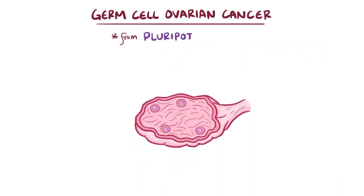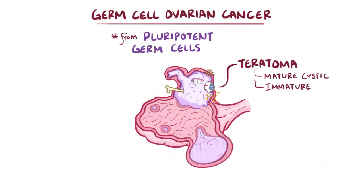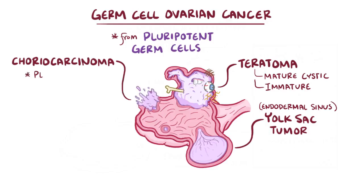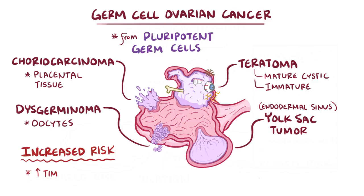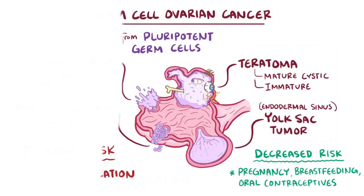As a quick recap, germ cell ovarian cancers come from pluripotent germ cells that normally develop into sperm or egg. The four major types of germ cell tumors are teratomas — both mature cystic and immature — yolk sac tumors or endodermal sinus tumors, choriocarcinoma or placental tissue tumors, and finally dysgerminomas or oocyte tumors. A well-known risk factor for ovarian cancers is the cumulative amount of time a woman spends in ovulation, with protective factors being pregnancy, breastfeeding, and oral contraceptive use.